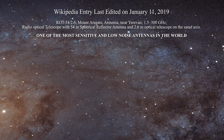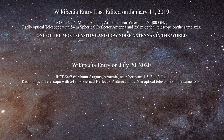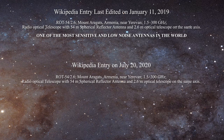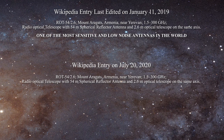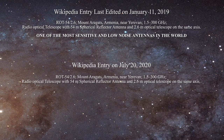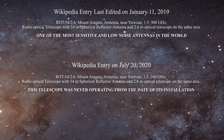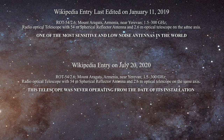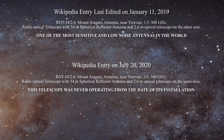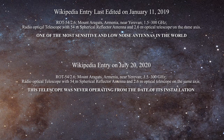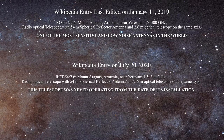However, Wikipedia has now changed the entry to read: 'ROT 54-2.6, Mount Aragats, Armenia, near Yerevan, 1.5–300 GHz radio-optical telescope with 54-meter spherical reflector antenna and 2.6-meter optical telescope on the same axis. This telescope was never operating from the date of its installation.' That is clearly not true. It seems that the cosmologists are even willing to change history. In fact, Harouni's antenna did function and he managed to publish a few papers before the Soviet Union collapsed.